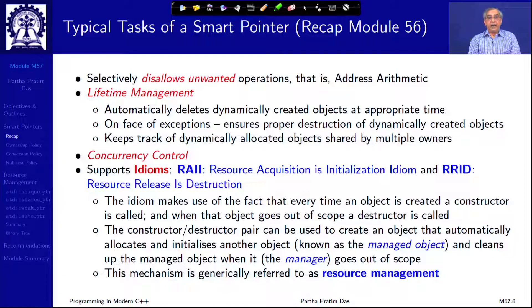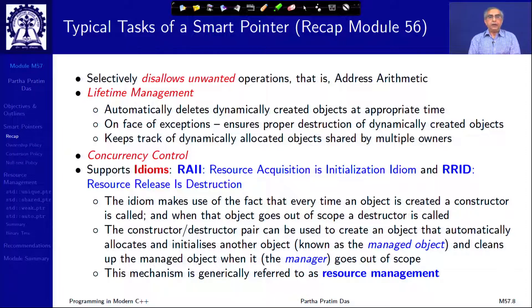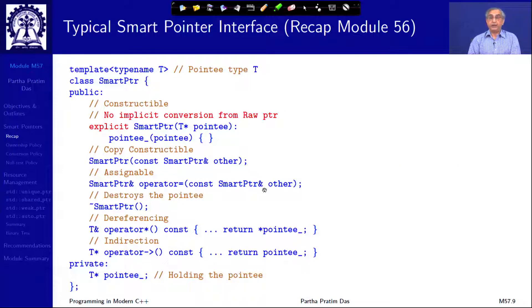The main highlights are that smart pointers disallow unwanted operations like address arithmetic, which is one of the biggest problem areas for bugs. They allow lifetime management by managing dynamically created objects according to the protocol of static objects. Smart pointers help in concurrency control and support the RAII and RRID idioms, which really helps resource management. The constructor must be explicit so that you cannot convert raw pointers implicitly.